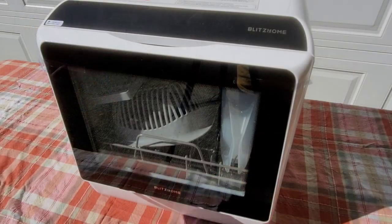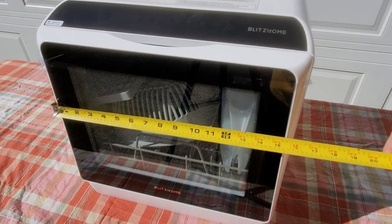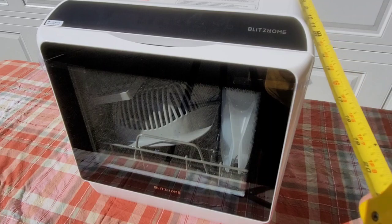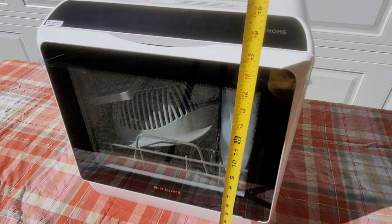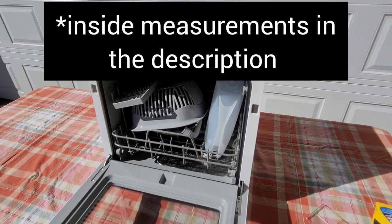Here's our Blitz Home Portable Apartment Size Dishwasher. Let's do a quick measurement. It measures 16 inches across, 16 inches deep and 18 inches tall. Let's open this up and take a look at what's inside.